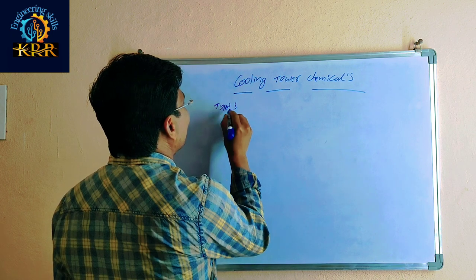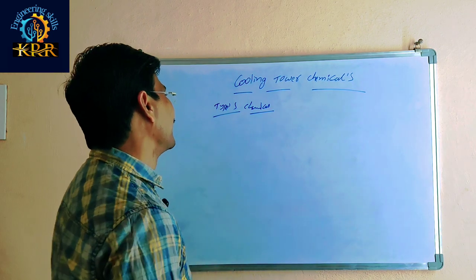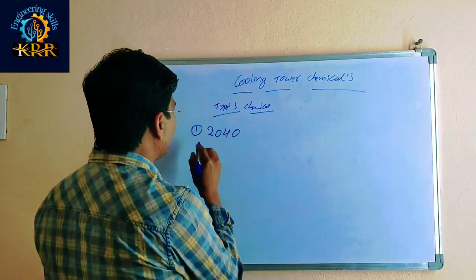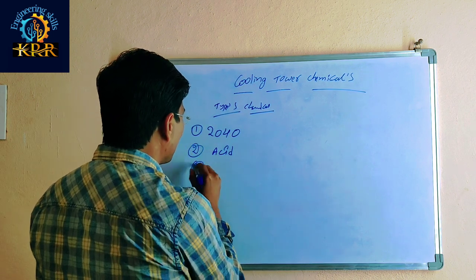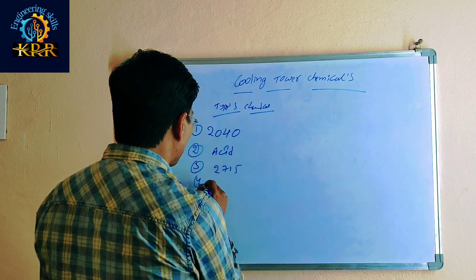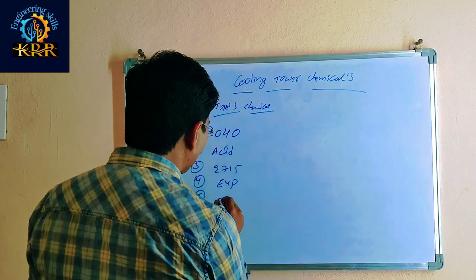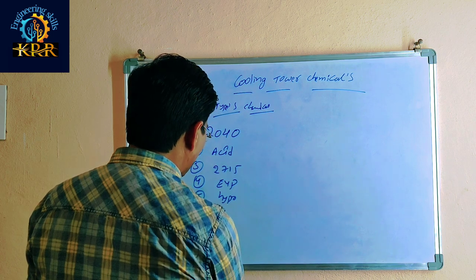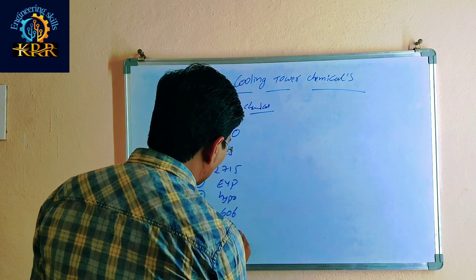What are the types of chemicals? First is 2040. Second is acid. Third is 2715. Fourth is EVP. Fifth is hypo. Sixth is 606. Seventh is 608.